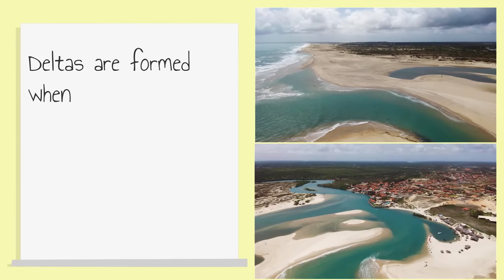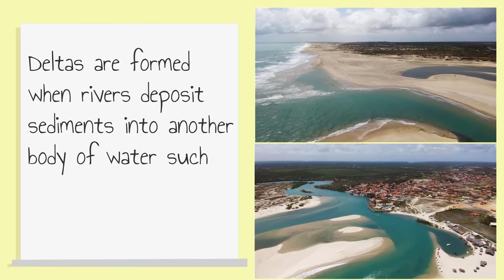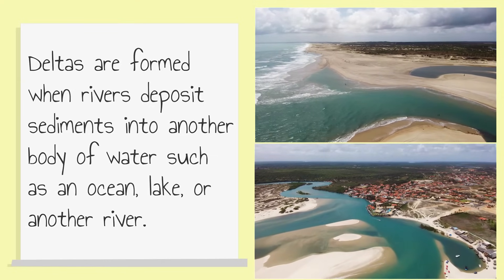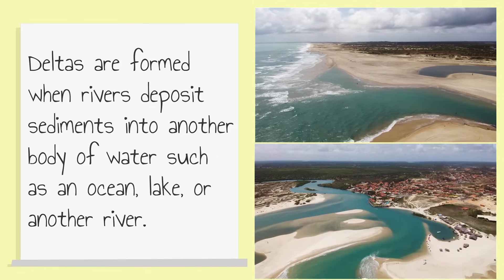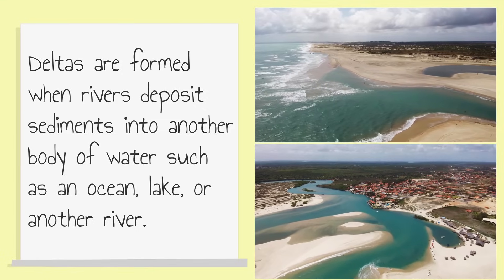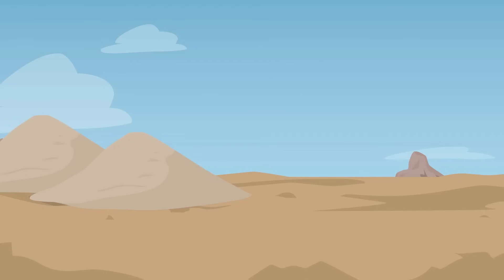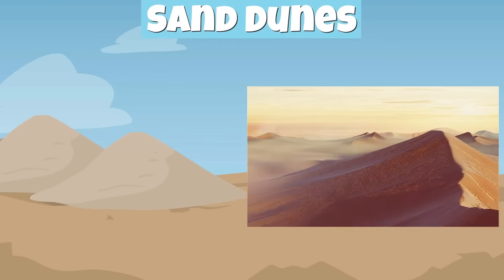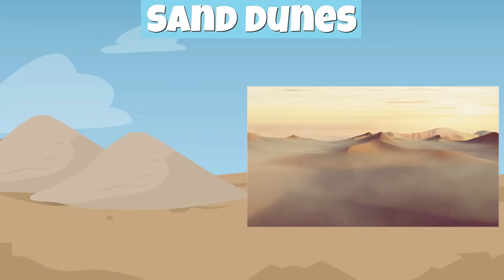For example, deltas are formed when rivers deposit sediments into another body of water, such as an ocean, lake, or another river. When sediments are deposited in the mouth of a river by moving water, this forms deltas. Sand dunes are formed as blowing wind erodes rocks and moves sediments and are dropped off in a new location.